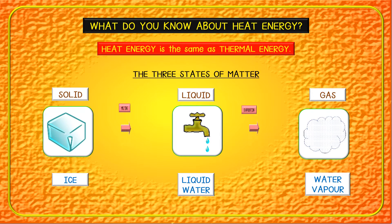When a solid is heated, melting takes place and the solid becomes a liquid. When a liquid is heated, evaporation takes place and the liquid becomes a gas.